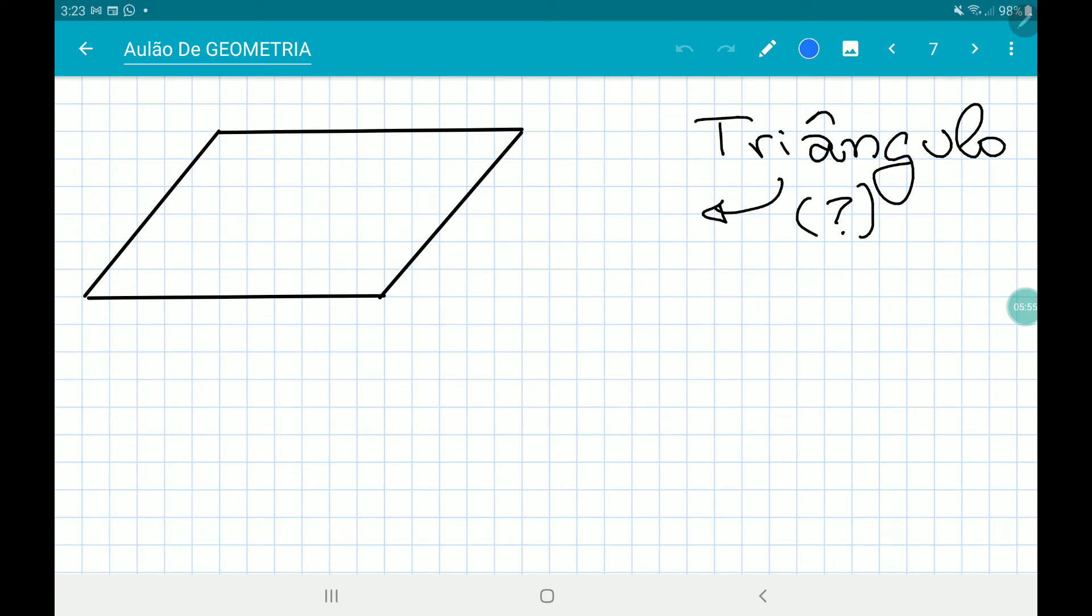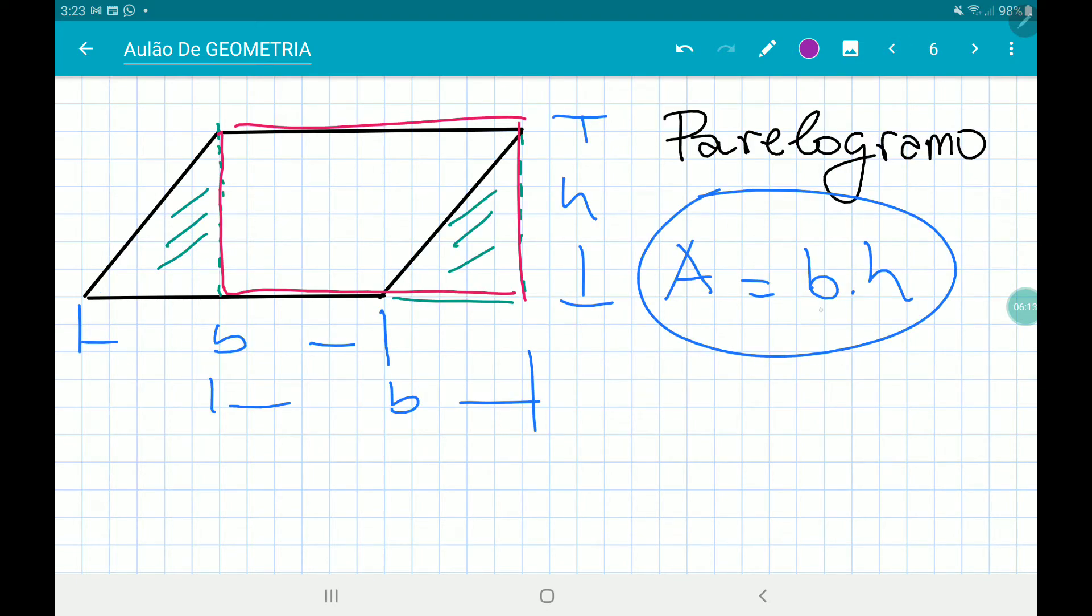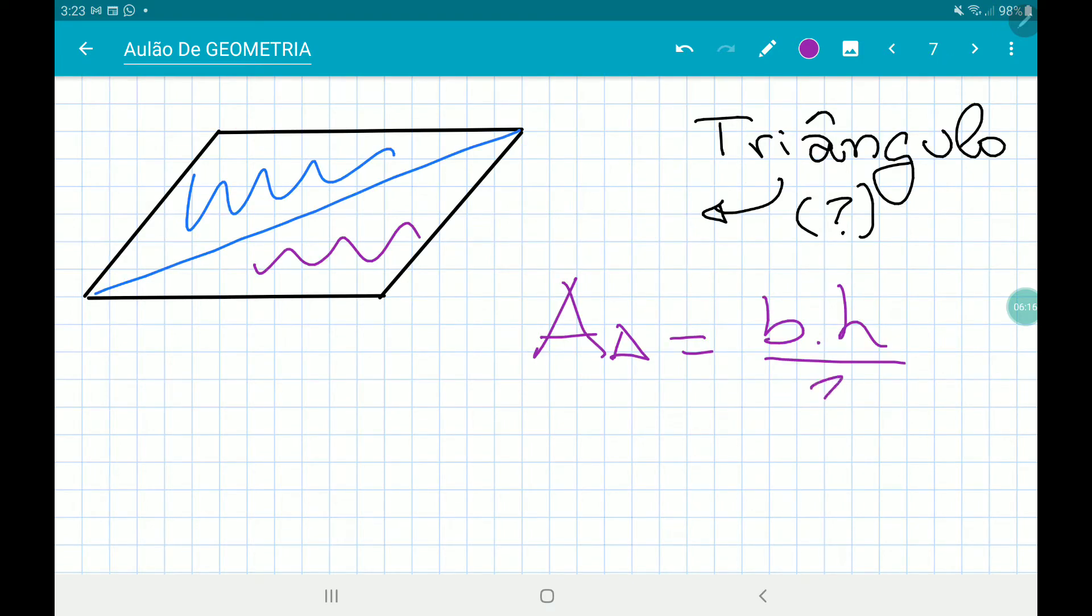And how about a triangle? If you cut the triangle in two, you have two different parts of the same area. So the area of a triangle is the half of the area of a parallelogram. So base times height divided by 2.